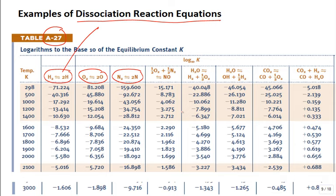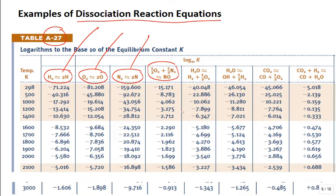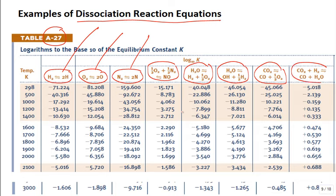Here we have dissociation of hydrogen — diatomic H2 dissociates to monoatomic H. Here is oxygen dissociating from diatomic to monoatomic O2 → 2O. The same thing for nitrogen. If you have oxygen and nitrogen in a mixture, they can react — some of the oxygen and some of the nitrogen dissociate and produce NO (nitric oxide). We can also take water and dissociate it into hydrogen and oxygen, or dissociate to OH and hydrogen. Carbon dioxide dissociates into carbon monoxide and oxygen; and CO2 plus H2 can dissociate to produce CO and water.